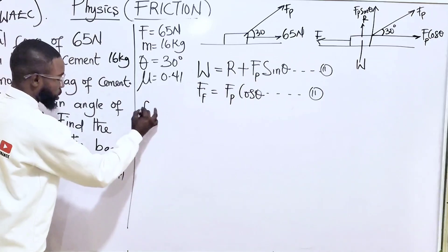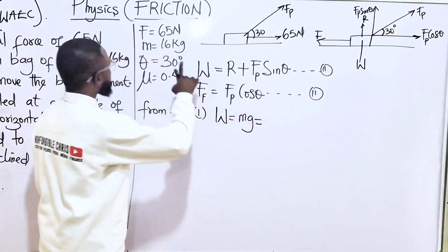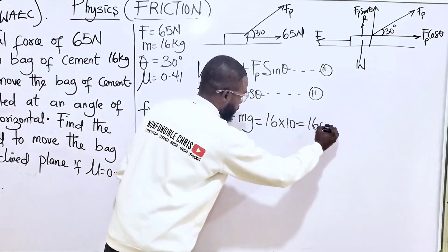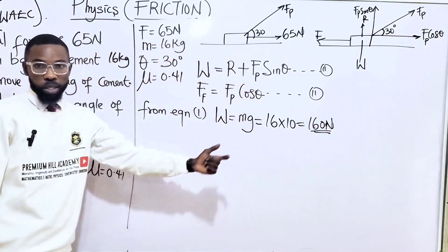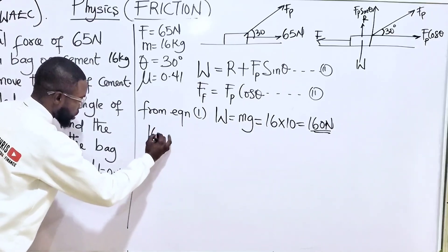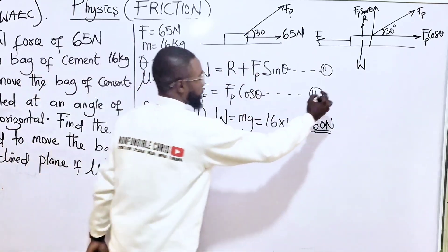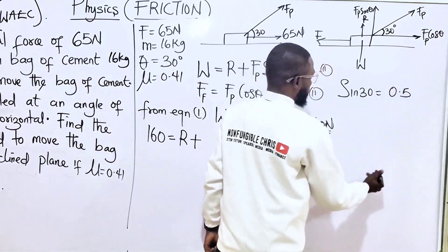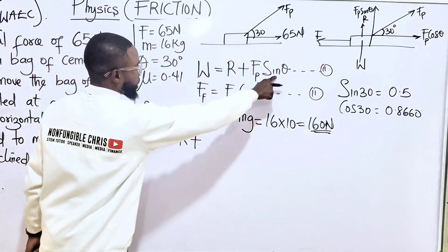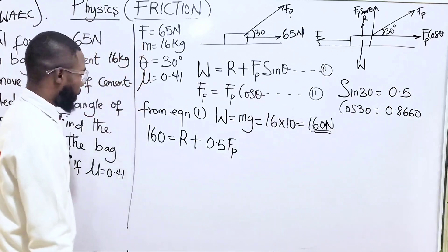From equation one, we know W = mg. With mass of 16 kg and g = 10, W = 160 N. So equation one becomes: 160 = N + F_p sin 30. Since sin 30 = 0.5, this becomes 160 = N + 0.5 F_p. This is our rearranged equation one.